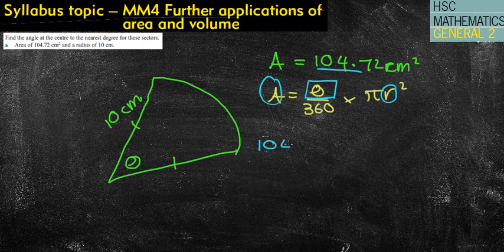So I'm going to substitute in 104.72 equals θ over 360. Remember, theta is just like an x or a y or a z, but it's specifically for an angle. And now I've got π times 10 squared. So that's my first line, and I'd have to see that there. That's certainly a mark there.